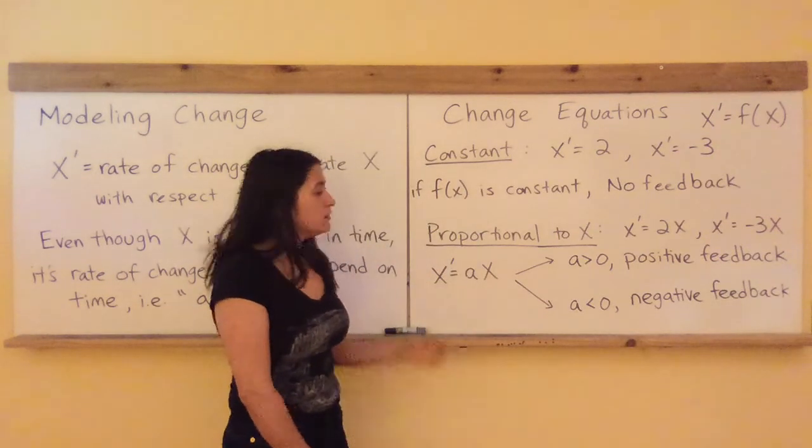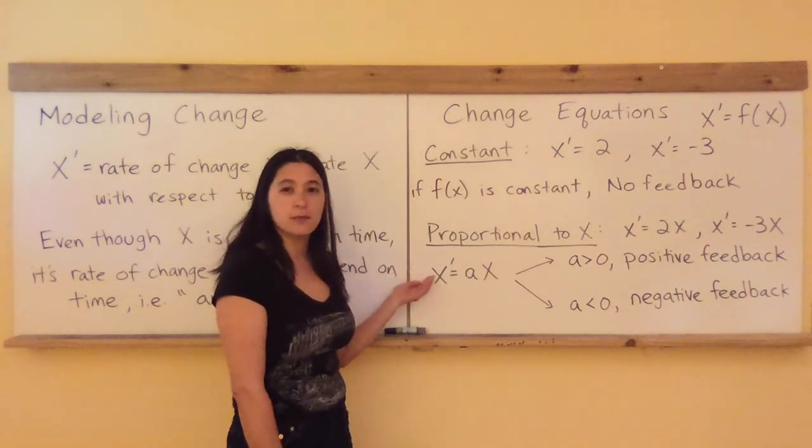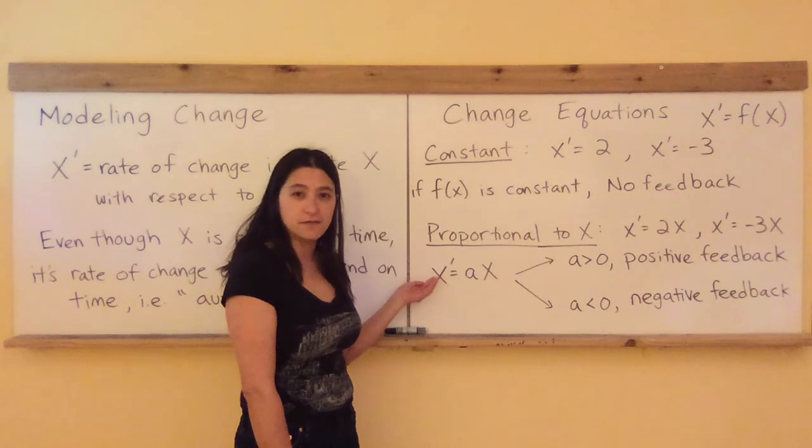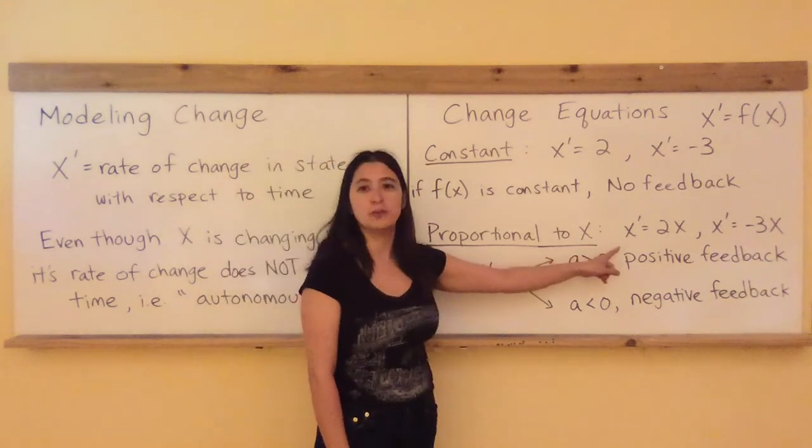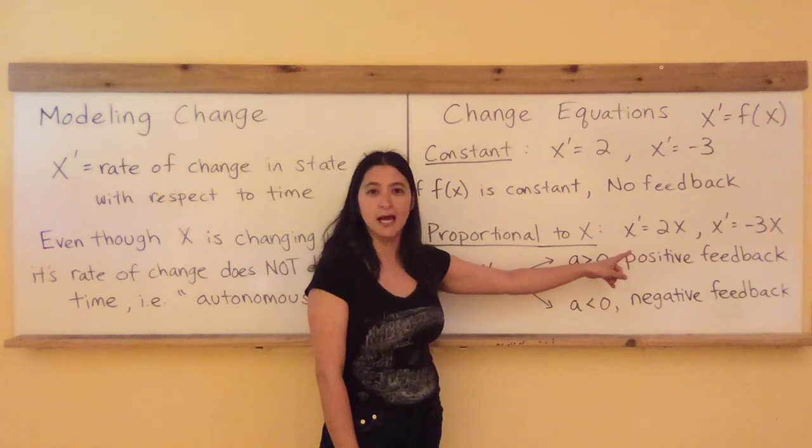So the next simplest example after that would be to consider rates of change that are proportional to X itself. Examples of this are X prime equals 2X and X prime equals minus 3X.